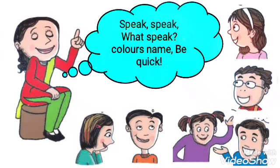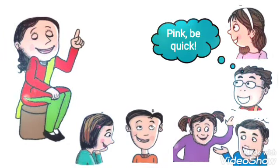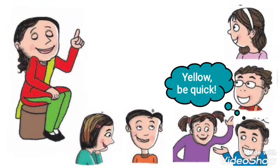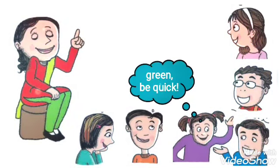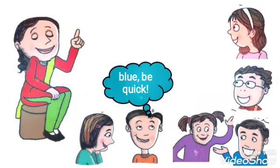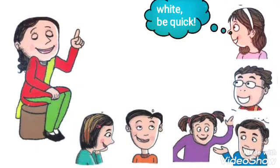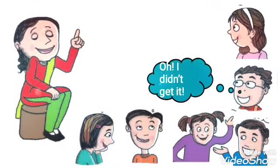Speak — colour's name. Be quick. Pink. Be quick. Yellow. Be quick. Green. Be quick. Blue. Be quick. Black. Red. White. Be quick. Oh, I didn't get it.